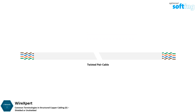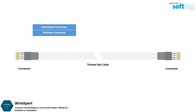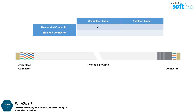All twisted pair cables must be terminated at both ends and they can be terminated with connectors. There are also shielded and unshielded connector types. Typically, an unshielded connector can be used on an unshielded cable. A shielded connector can also be used on an unshielded cable, however, it will provide no benefit. An unshielded connector cannot be used on a shielded cable, as shielded cables need shielded connectors for the ground and shield to function properly.